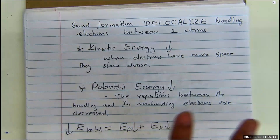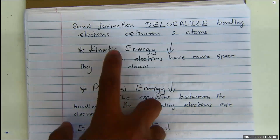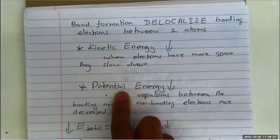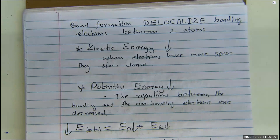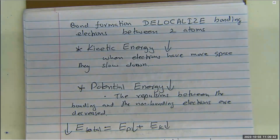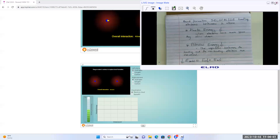We talked about why bond formation decreases total energy. Due to delocalization of bonding electrons between two atoms, electrons have more space to move around — they slow down, so kinetic energy decreases. Also, electron-electron repulsions between bonding and non-bonding electrons decrease, so potential energy decreases too. Bonds form because it decreases total energy — not because atoms 'want' to be like a noble gas. Atoms don't have needs or greed.